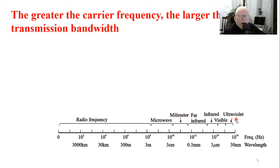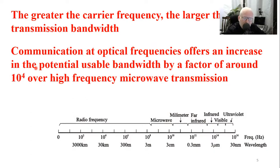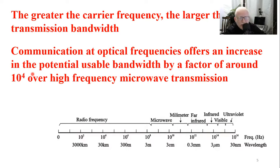Whenever you transfer to the terahertz carrier frequency — the region for optical signals, whether infrared, visible, or ultraviolet — then you can expect a major increase in the bandwidth of your signal. Whenever we shift to that optical signal, we should see a 4 orders of magnitude, or 10^4, increase in the available bandwidth. This simply answers why we should shift to optical communication whenever applicable. Any customer needs higher bandwidth because higher bandwidth means higher internet speed, downloading speed, uploading speed, transmission speed, and streaming speed.